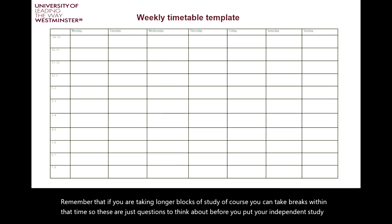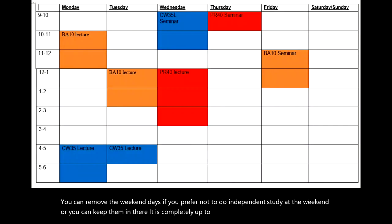On this slide we have a weekly timetable template, which is very easy to replicate on Word using the table function, on Excel, and other software as well. You can absolutely personalise this — you can change the hours, have the timetable starting earlier or later, remove the weekend days if you prefer not to do independent study at the weekend, or keep them in. In this example, we only have the timetabled classes: lectures and seminars for three different modules represented by three different colours — red, blue and orange — giving a total of 15 timetabled contact hours. You may have more or less; this is just an average.